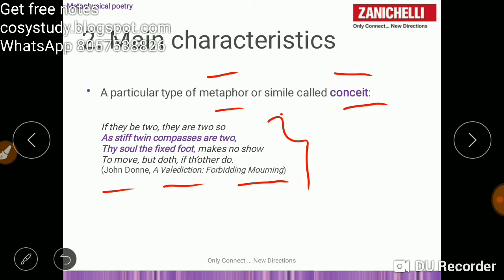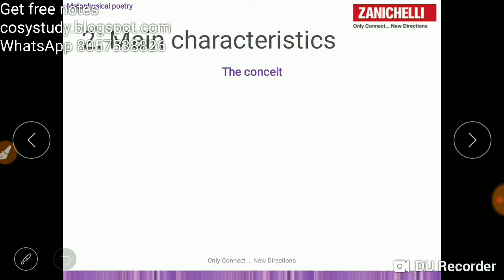John Donne, A Valediction Forbidding Mourning. The poet compares the souls of lovers to compasses. If one goes away, the next is connected to that.